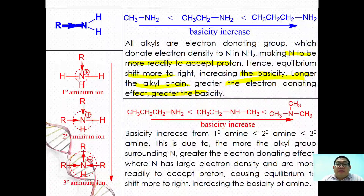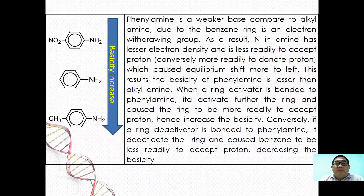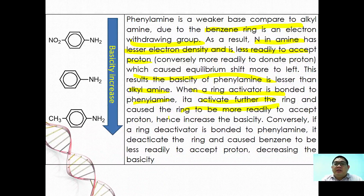When comparing different classes of amines, basicity generally increases from primary to secondary to tertiary, because more alkyl groups increase electron density on nitrogen, making it more ready to accept a proton. Phenylamine is a weaker base than alkyl amines because the benzene ring is an electron-withdrawing group, reducing electron density on nitrogen. Ring-activating substituents on phenylamine further increase basicity, while ring-deactivating substituents decrease basicity.